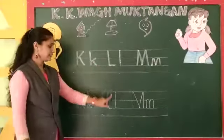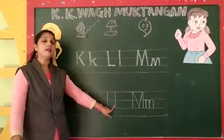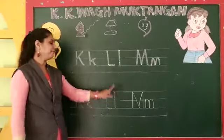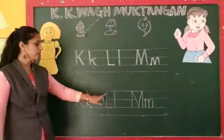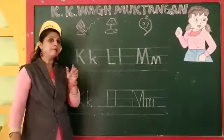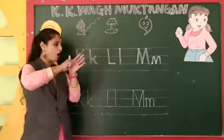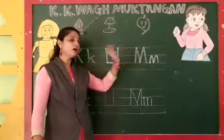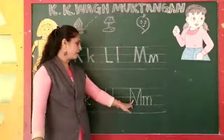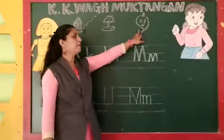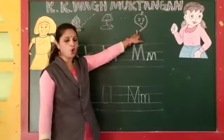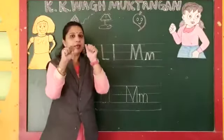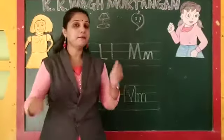L says — leaf, lamb, lock. M says — mama, monkey, mango, mask, milk, medicine.